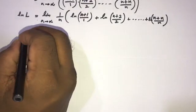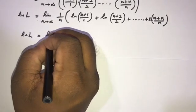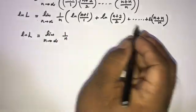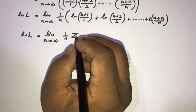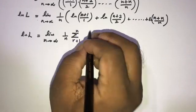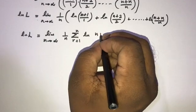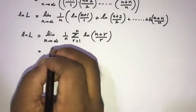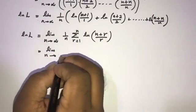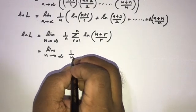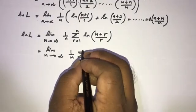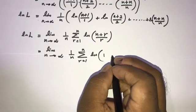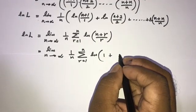So natural log of L equals the limit as n approaches infinity of 1 over n times the sum from r equals 1 to n of natural log of (n plus r) over r. We can rewrite this as the sum of natural log of 1 plus n over r, which I write as 1 plus 1 over (r over n).